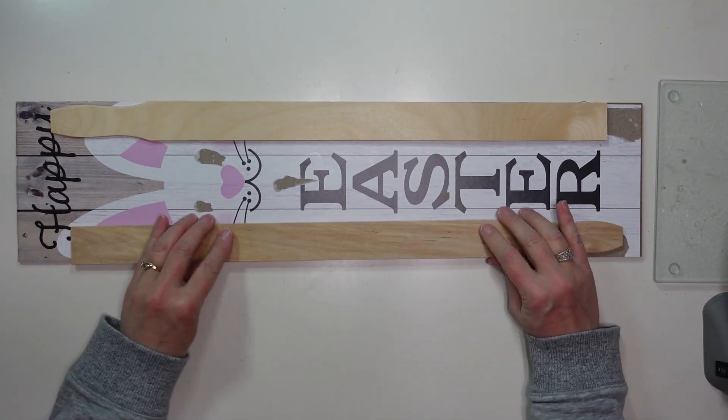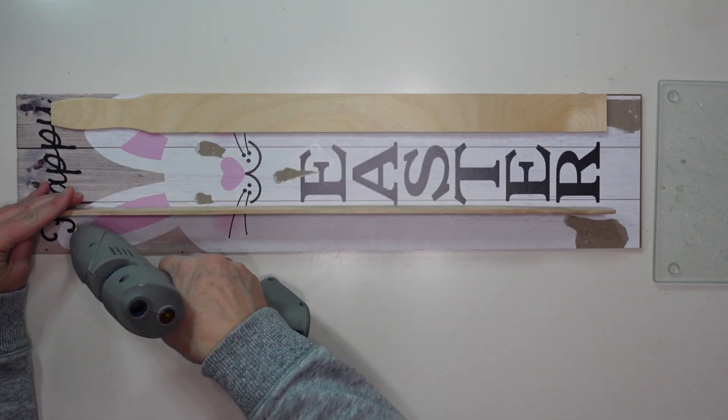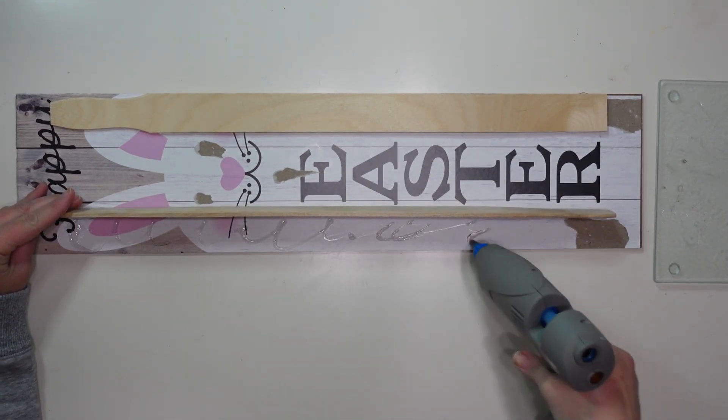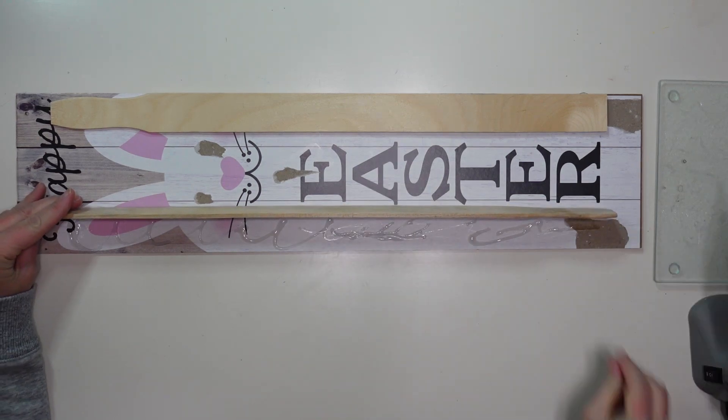Adding these stir sticks to this sign is really going to provide some stability because the Dollar Tree sign is not real thick and so it's a little bit flimsy.